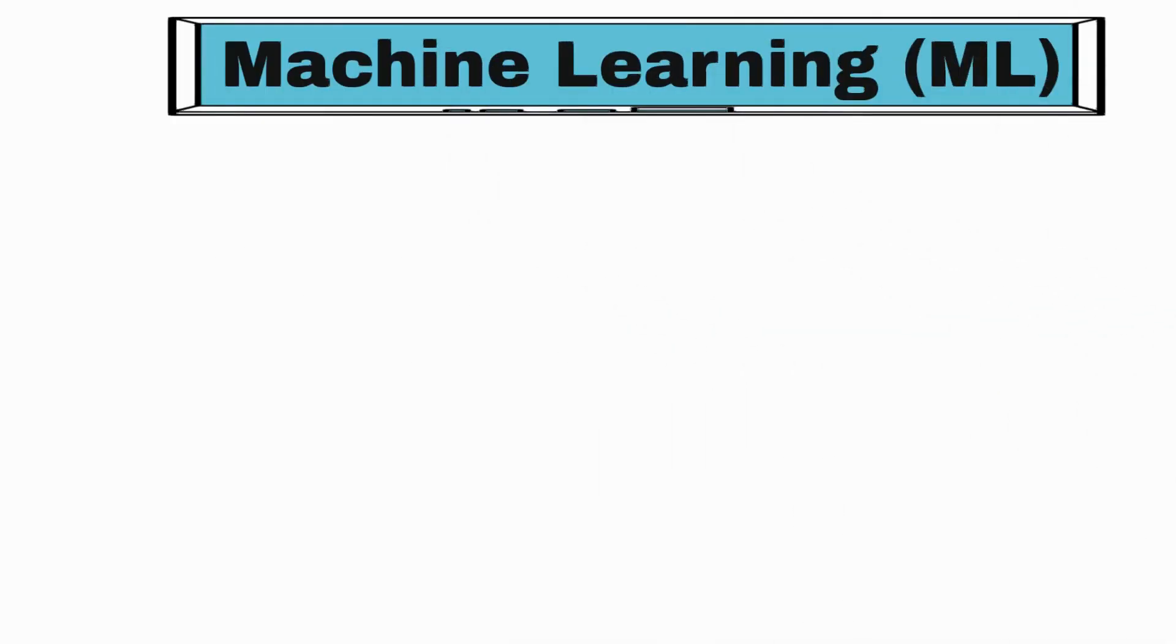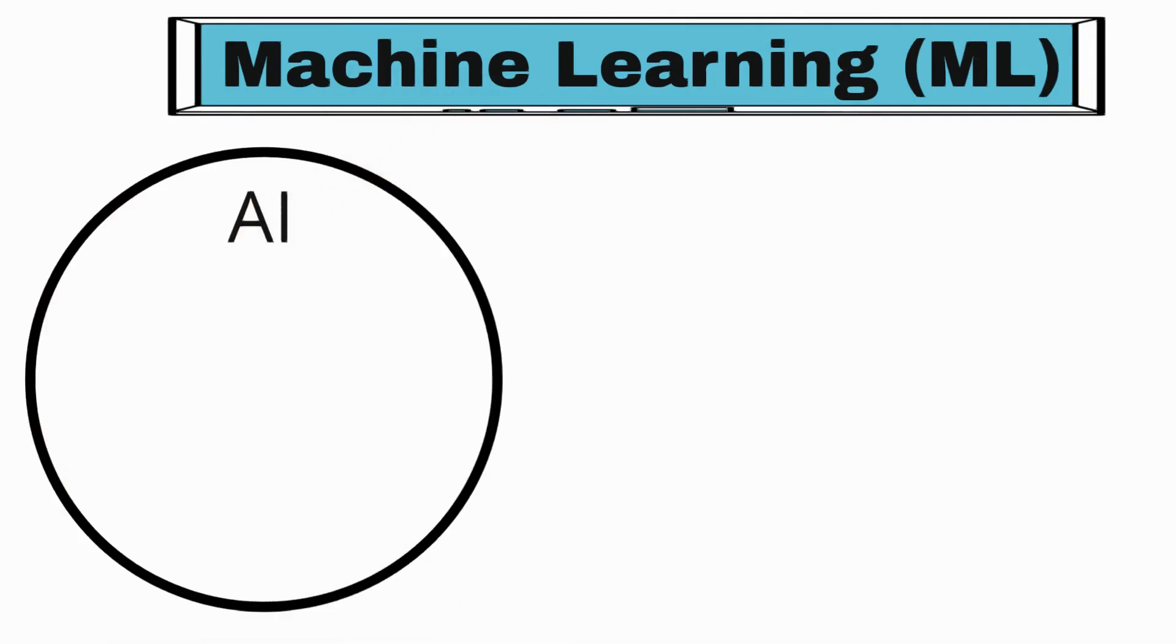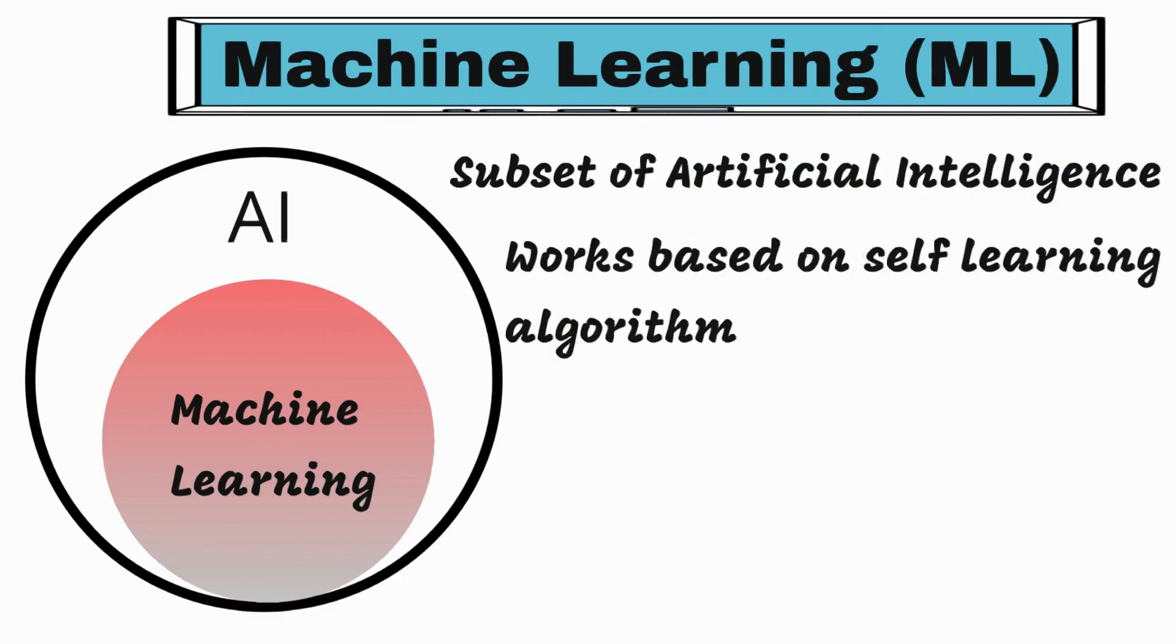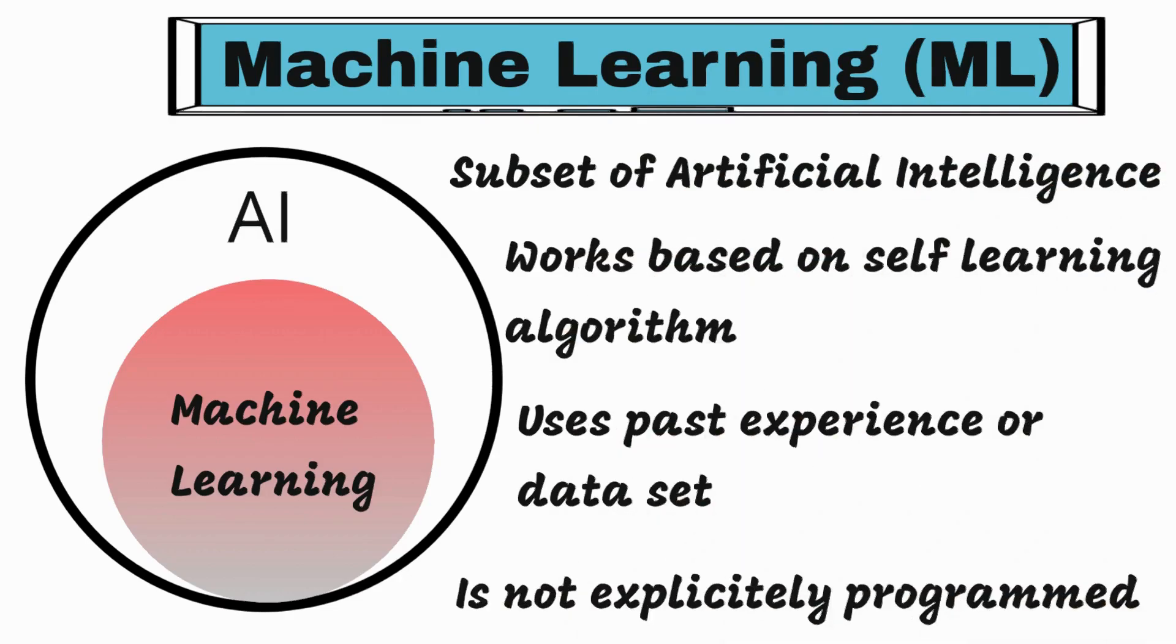Machine learning is a subset of artificial intelligence which works based on self-learning algorithms using past experiences or data sets without being explicitly programmed.